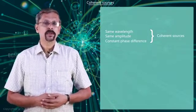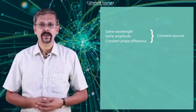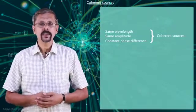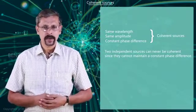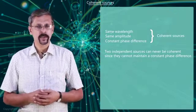Two independent sources are not coherent and hence cannot produce sustained interference pattern. Two independent sources can never be coherent because they cannot maintain a constant phase difference between them.